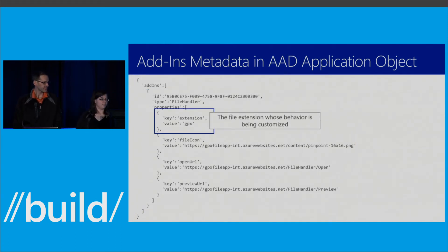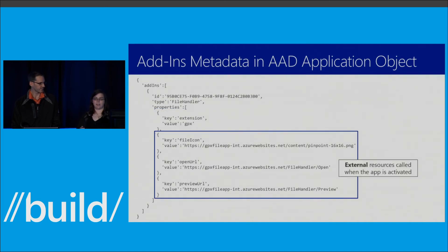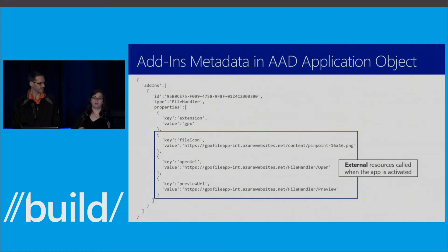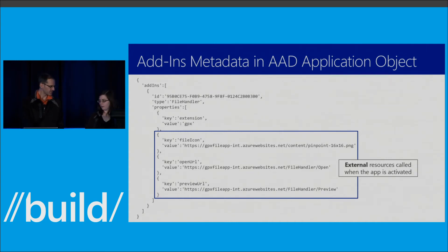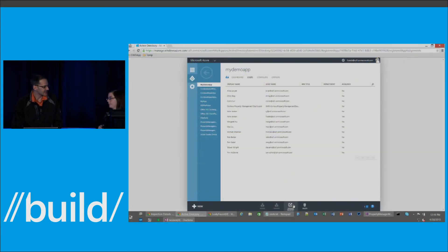We've created an add-ins property in the Azure AD app that can contain any number of file handler extensions. You specify a unique ID, the file extension (e.g., gpx), and endpoints for the file icon, an HTML preview in an iframe, a website that opens when the file is opened in SharePoint or OneDrive for Business, and — rolling out very shortly — Outlook Web App. This data lives inside Azure AD. Right now you can use Azure AD/Active Directory APIs to write this data to your application object, and we're also creating sample code and an app to help you edit this data until the Azure management portal supports it natively.